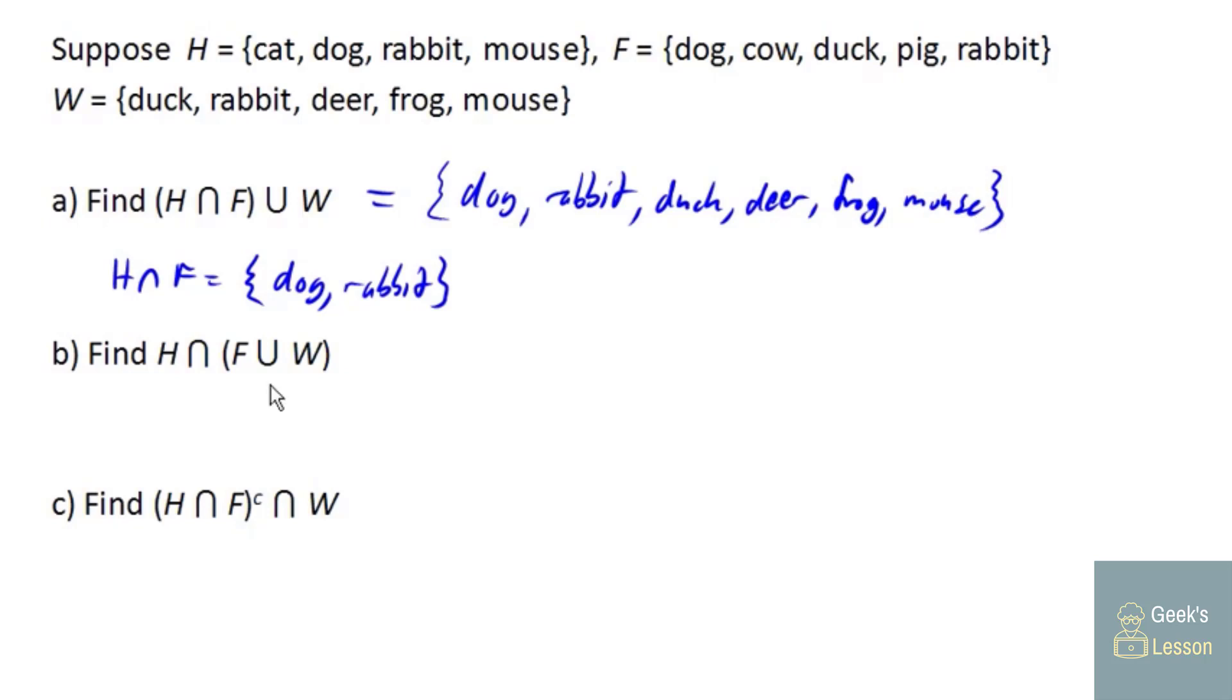Now, let's try the next problem, which you'll notice has the same sets, same symbols, but different grouping order. So first now we're gonna find the union of F and W. This is gonna be a fairly big set. So we got dog, cow, duck, pig, and rabbit from the set F. We're gonna union that with W. We already got duck, we already got rabbit. We need a deer, we need a frog, and we need a mouse. And now we're going to intersect that with the set H. So let's see here. Dog, both of them have in common. Cat, no. Rabbit, yep. And how about mouse? Mouse is in both sets. Now notice that the results are different, so the order of grouping does make a difference here.